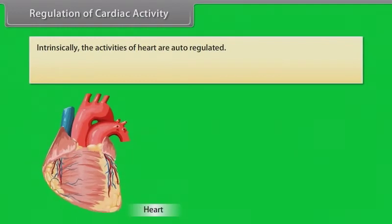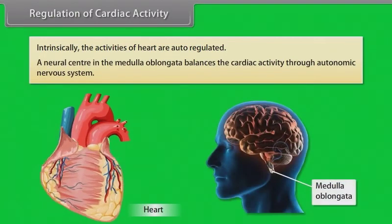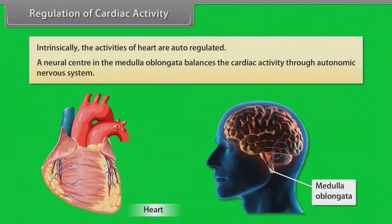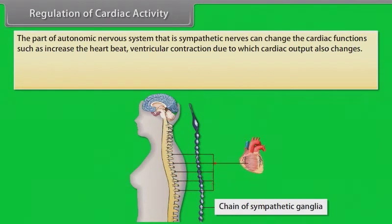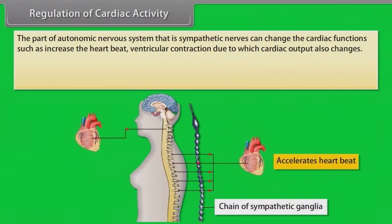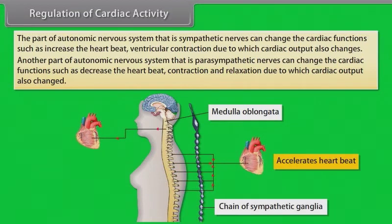Intrinsically, heart activity is auto-regulated. A neural center in the medulla oblongata balances cardiac activity through the autonomic nervous system. The sympathetic nerves can alter cardiac functions such as heartbeat, contraction, and relaxation, thereby changing cardiac output.